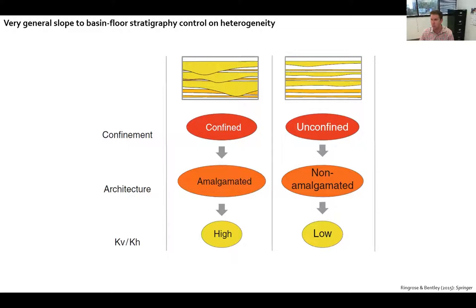On the other end of the spectrum, deposits tend to be a little bit more sheet-like and a little bit more layered. These commonly are deposited in unconfined settings. As a result of being non-amalgamated, the KV/KH tends to be relatively low.